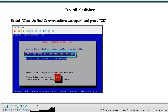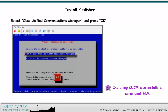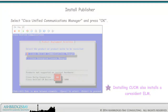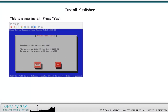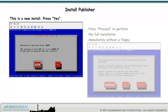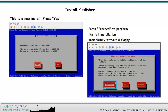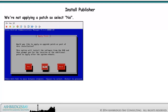Select Cisco Unified Communications Manager and press OK. Installing CUCM also installs a co-resident ELM. This is a new install — press Yes. Press Proceed to perform the full installation immediately, without a floppy, with the platform configuration. We're not applying a patch, so select No.